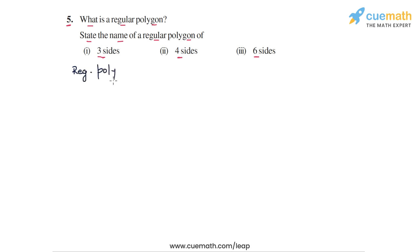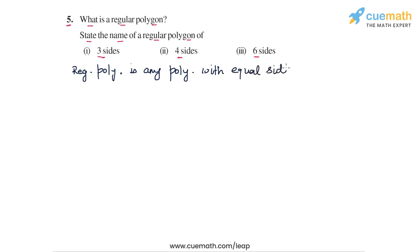A regular polygon is any polygon with equal sides — all the sides equal — and all the angles equal as well. So equal angles. This is the definition of a regular polygon.